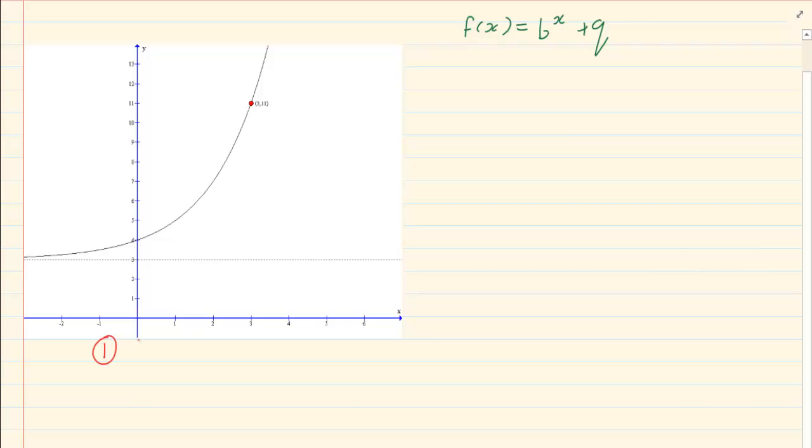Number one, you're going to substitute your asymptote. Number two, you're going to substitute a point. And number three, you're going to solve for A.